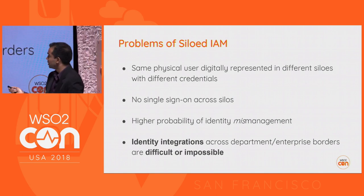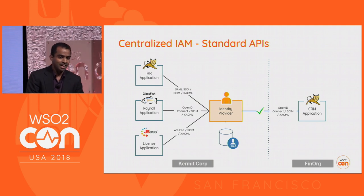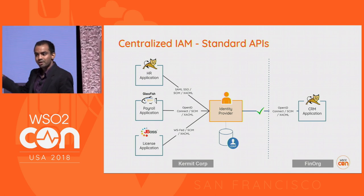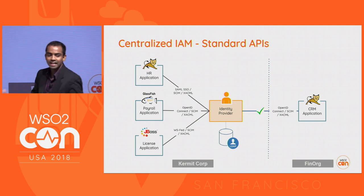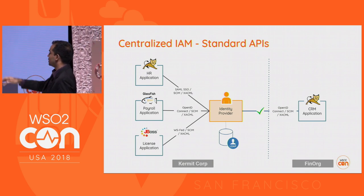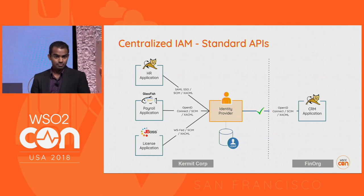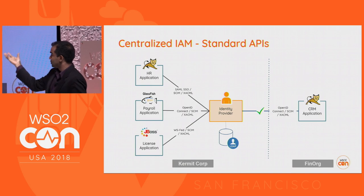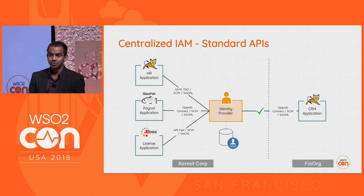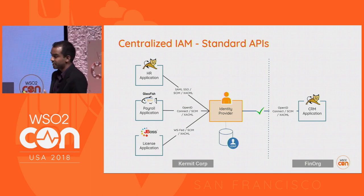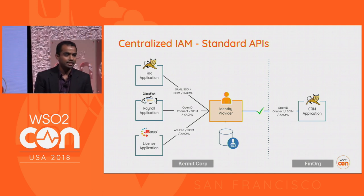Kermit understood the problem and introduced standard APIs — an open identity platform. The identity provider can now talk in standard protocols. For example, the HR application will authenticate using SAML SSO, provision users using SCIM, and authorize using XACML — all standard APIs. Similarly, payroll, license, and all other applications now communicate using standard APIs.